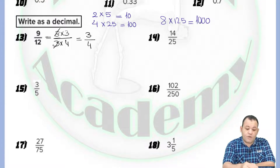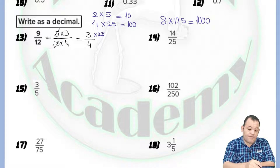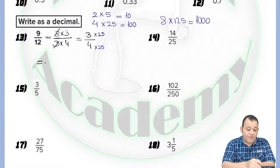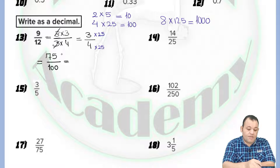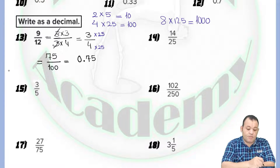We need to convert all denominators to ten, hundred, or thousand. Because we have four as the denominator, I multiply both the numerator and denominator by twenty-five. Three times twenty-five equals seventy-five, and four times twenty-five equals one hundred. Because we have one hundred — two zeros — I count two places from the right, put the decimal point, and the answer is 0.75.